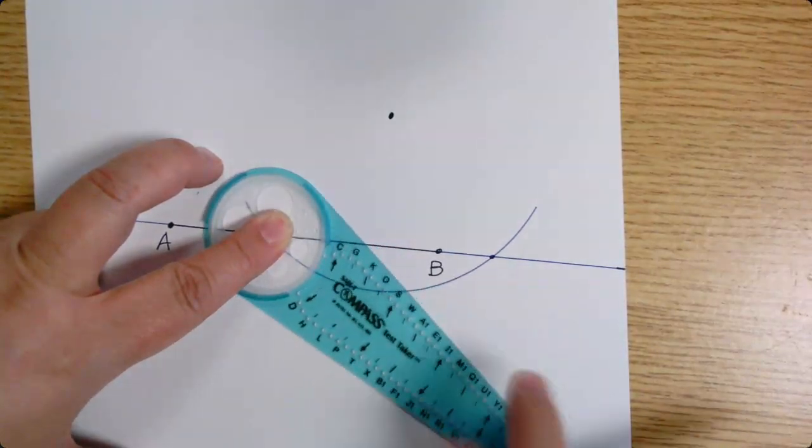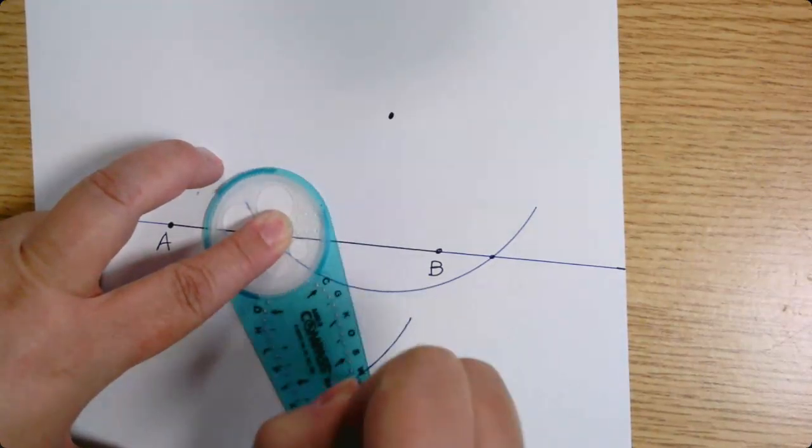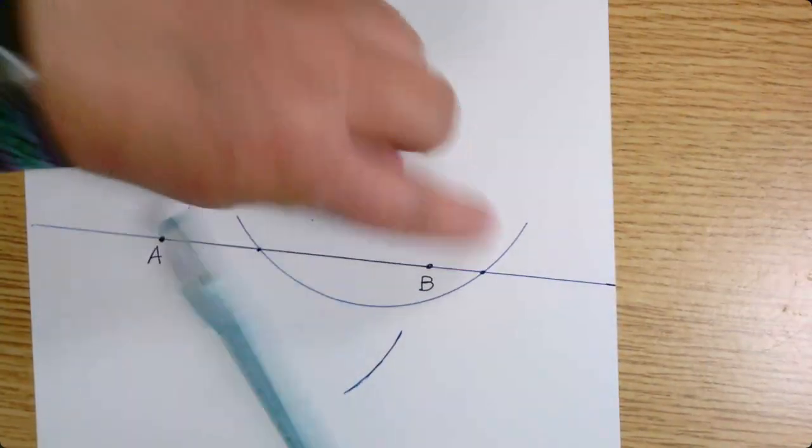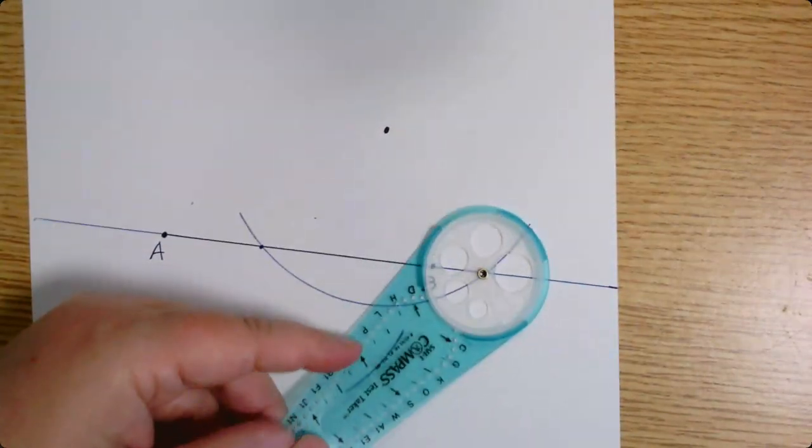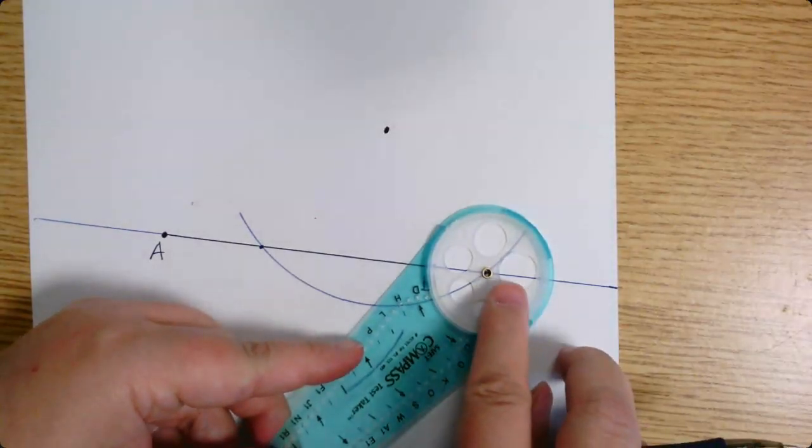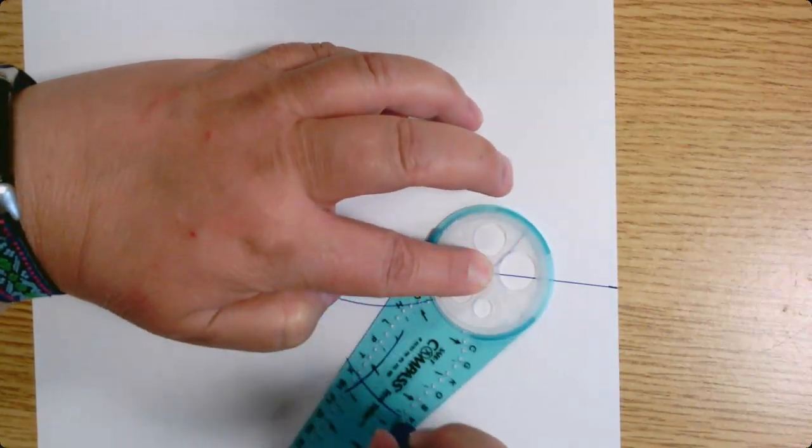I'm going to pick, how about this point between W and A1? Okay, there's an arc, and then I'm going to move over to this other point of intersection of the original arc.